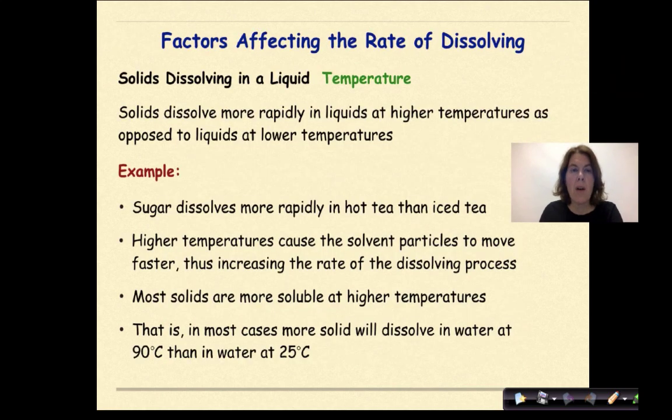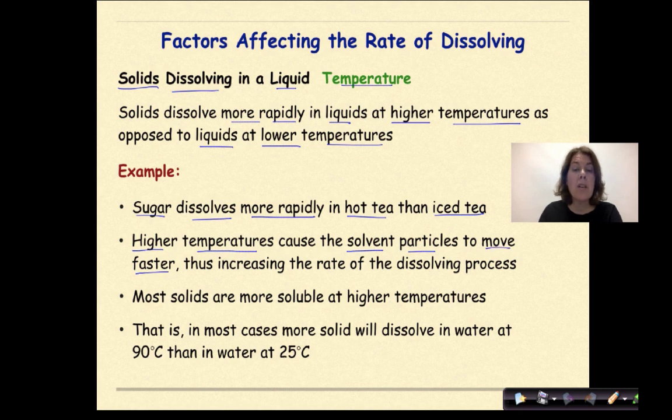Factors affecting the rate of dissolving. Solids dissolving in a liquid with a focus on temperature. Solids dissolve more rapidly in liquids at higher temperatures, as opposed to liquids at lower temperatures. For example, sugar dissolves more rapidly in hot tea than in iced tea. Higher temperatures cause the solvent particles to move faster, thus increasing the rate of the dissolving process.